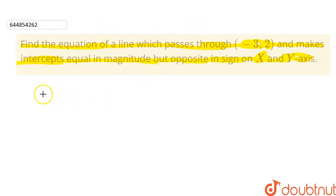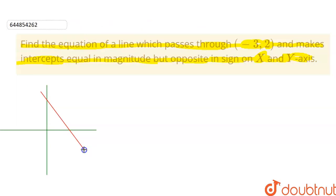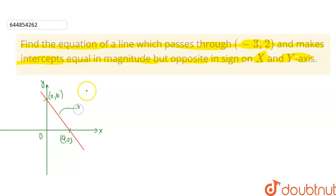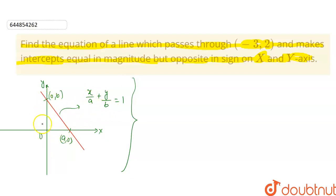Let's suppose you have a coordinate axis and a line which passes through it. This is the x-axis, this is the y-axis, and this is the origin. This point is 'a comma 0' and this point is '0 comma b'. Then the equation of this line will be x by a plus y by b is equal to 1. Here 'a' is the x-intercept and 'b' is the y-intercept.